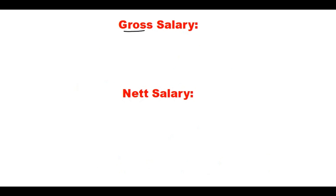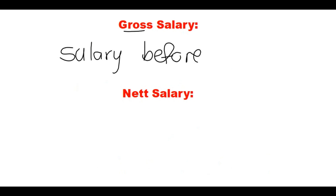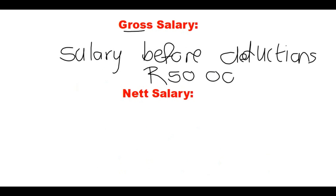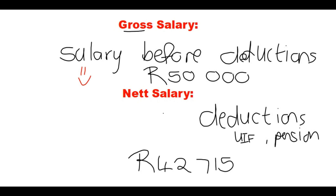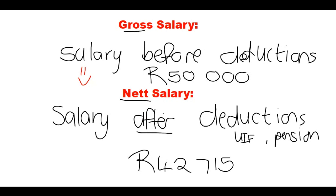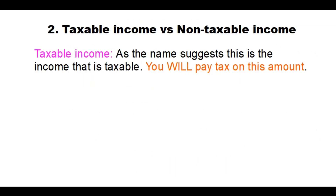We also need to know the difference between gross and net salary. Gross salary is your salary before deductions. Typically when you get a job, they promise you something like R50,000 and that's written in your contract — which looks like a good number. However, there are deductions like UIF, pension fund, and so on, and you take home less — for example, R42,715. This is called your net salary.